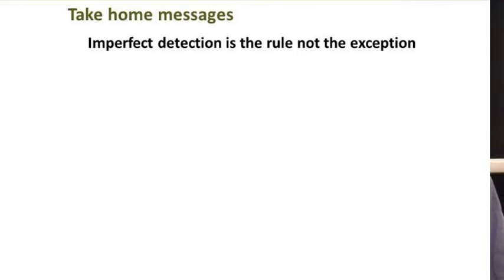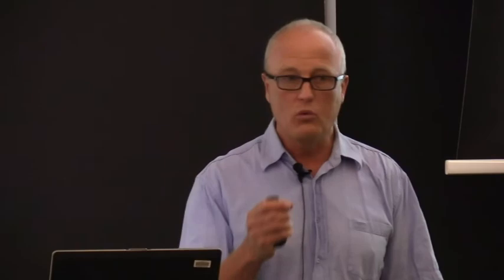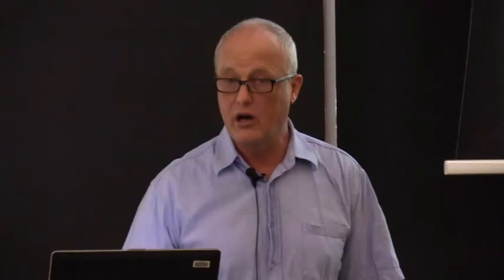The take-home messages I want you to get from this: remember, imperfect detection is the rule, not the exception — we're not very good at finding everything. But if we're going to be effective at surveillance practices, we have to know our detection rates. There is a good, sound theoretical and mathematical basis for this. We can do easy-to-run field experiments, or expert elicitation, or a combination of both, to work out detection rates for different surveillance practices. So we can answer the questions: if I search for something, how likely am I to find it? Or how likely am I to ensure it isn't there if I've searched? This information will really support surveillance and support decision-makers in allocating resources. We have the ability to either be seen to be doing something, or to be seen to be doing something and know how effective we are at it. And I know which one I'd rather be on. Thank you.